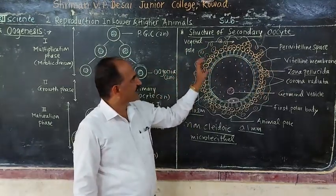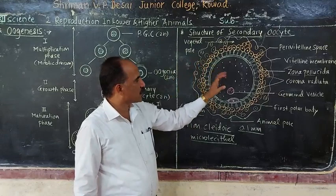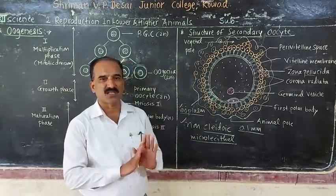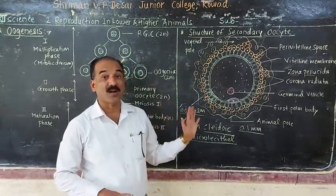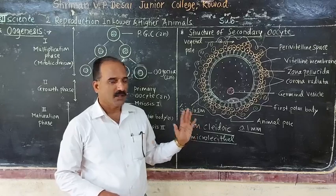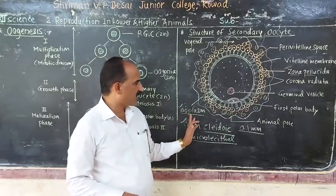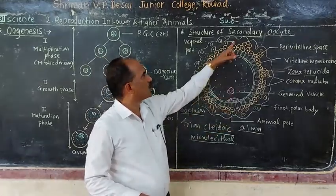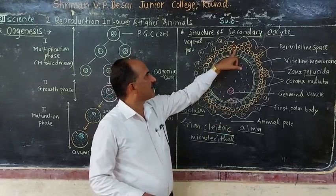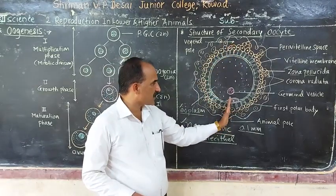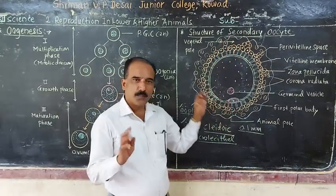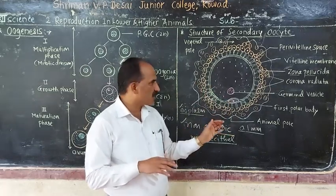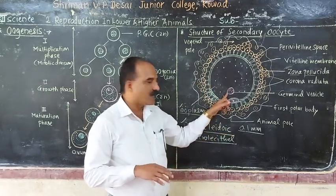The secondary oocyte shows polarity, with two poles: the animal pole and the opposite vegetal pole. The animal pole is the side towards the germinal vesicle.